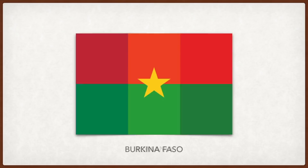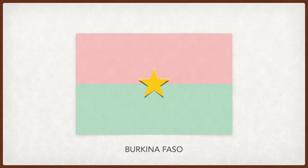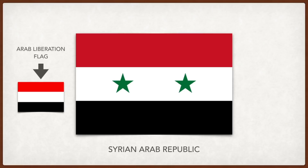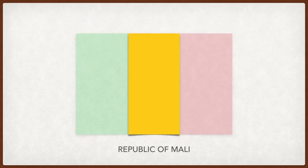Syria: the colors come from the pan-Arab or Arab liberation flag; a 14th-century poem ascribes this meaning — white for action, black for battles, green for fields, and red for swords. Mali: the green represents the land, the gold purity and mineral wealth, and the red is for the bloodshed for independence from France.